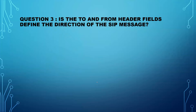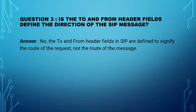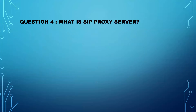The next question: do the To and From header fields define the direction of the SIP message? The answer is no. The To and From header fields in SIP signify the route of the request, not the route of the message.